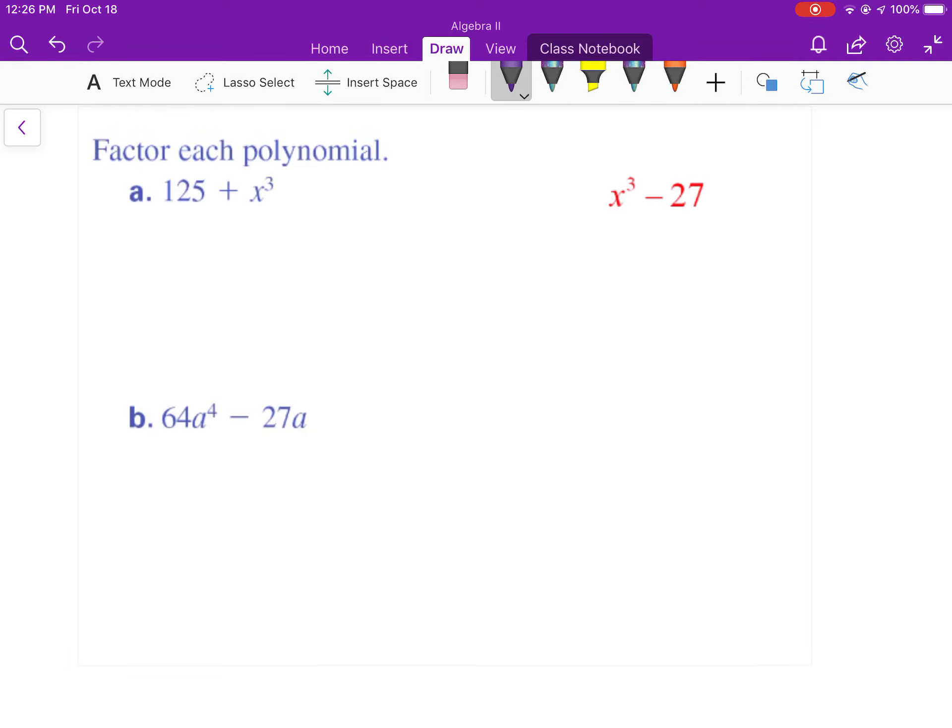Alright, so here, the sum of two cubes, because 5 to the third power gets you 125. x to the third power gets you there. So, 5 plus x. Then it's a squared, so 5 squared, which is 25. Multiply those three together, get 5x, and then x to the second power. But, it should be same and the opposite, so that's going to be a minus.